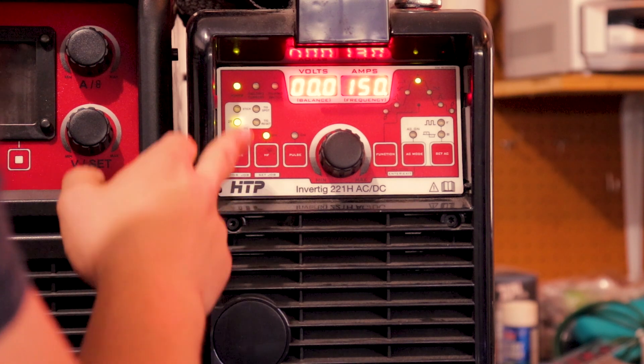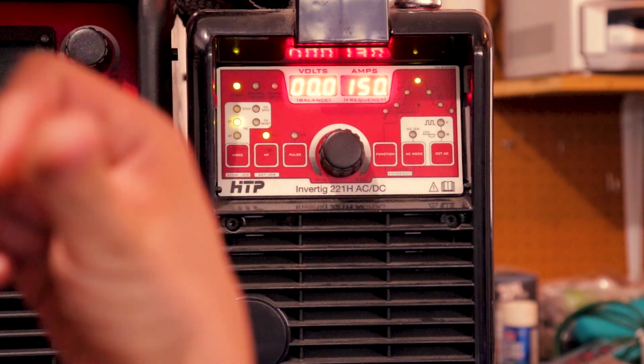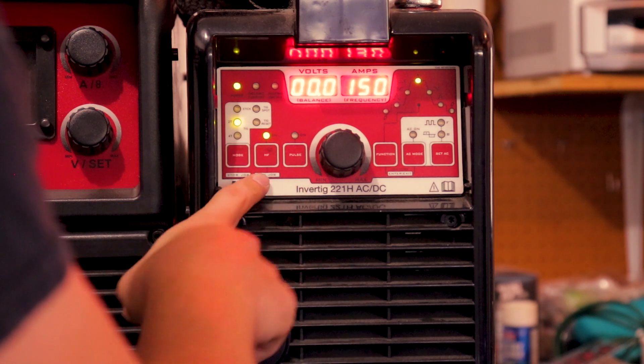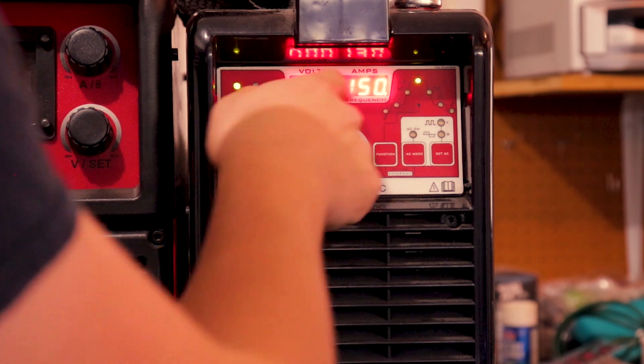So stick around, let's get to it. I'm not doing anything fancy, it's just regular 2T mode because we're using the foot pedal. High frequency is on, no pulse, 150 amps.